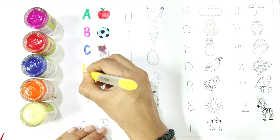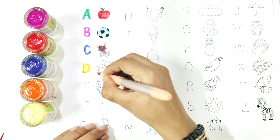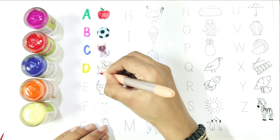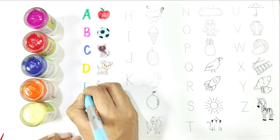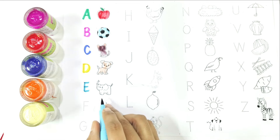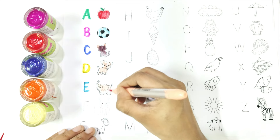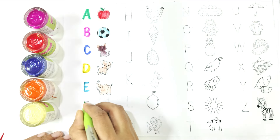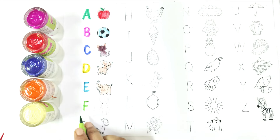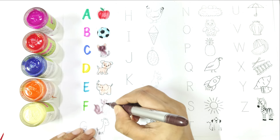Write with me. D — D is for dog. Again, say with me: D is for dog. Write with me. E — E is for elephant. Again, say with me: E is for elephant. Write with me. F — F is for fox. Again, say with me: F is for fox.